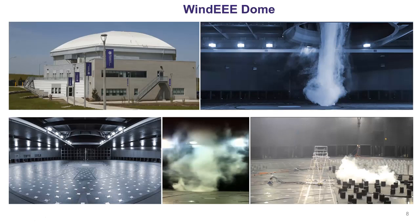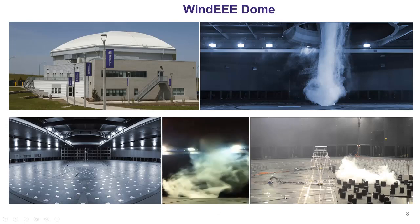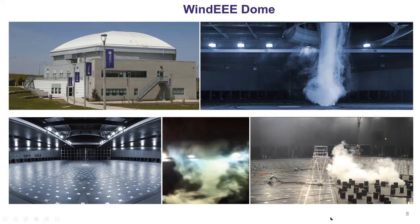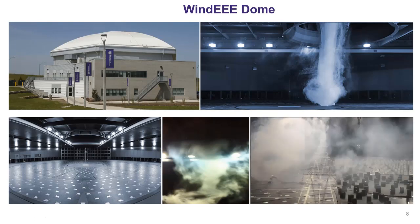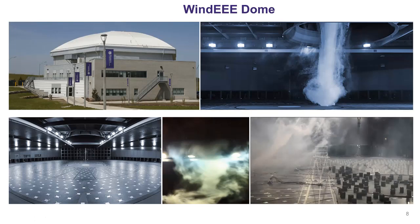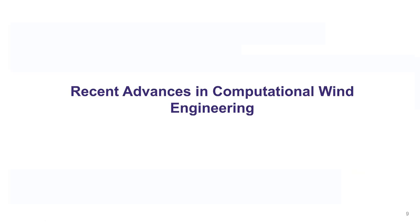Most of the examples discussed so far are for straight wind, but wind could be tornadic or downburst. Luckily, at Western we have the Wind-E, which is capable of producing tornadic flow and downburst flow. My focus, however, will be on the computational approach.